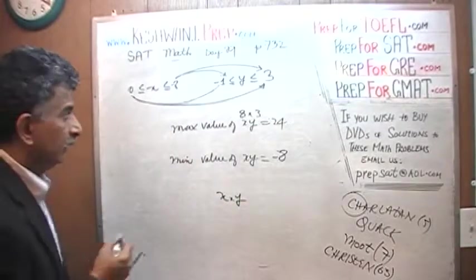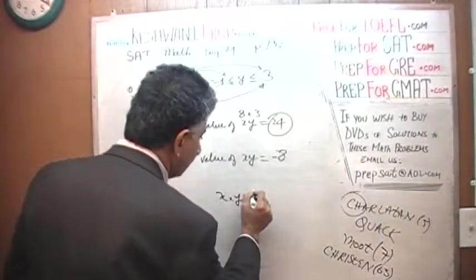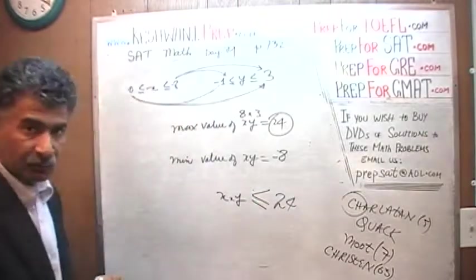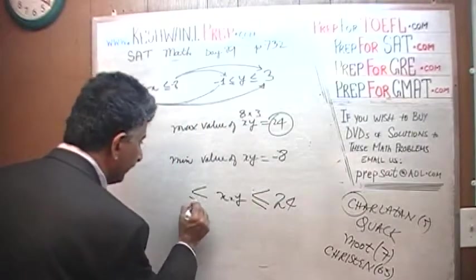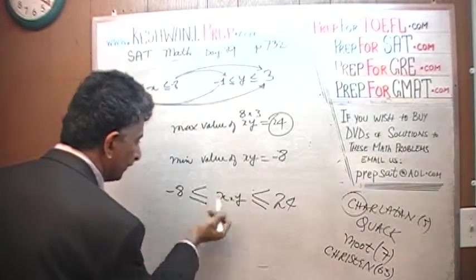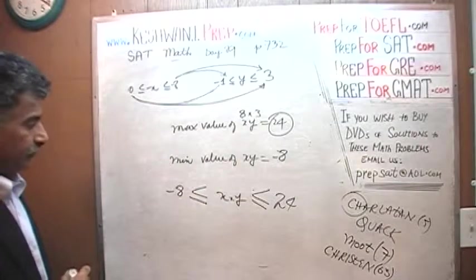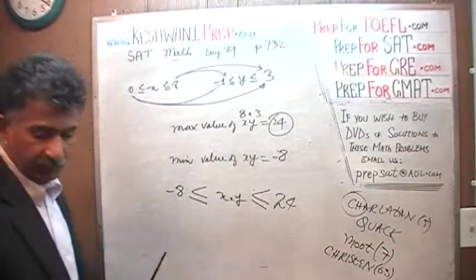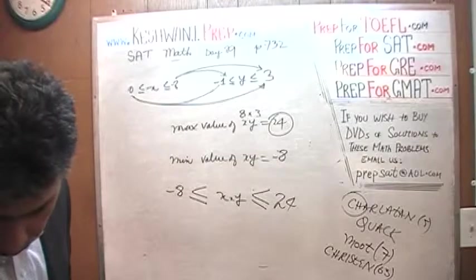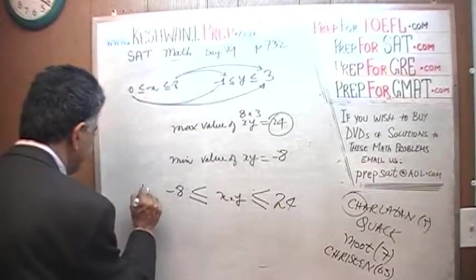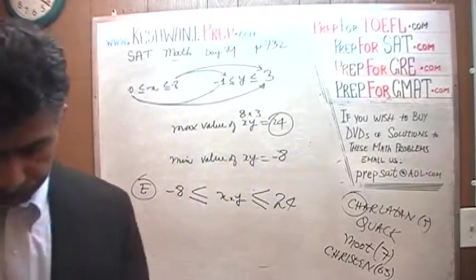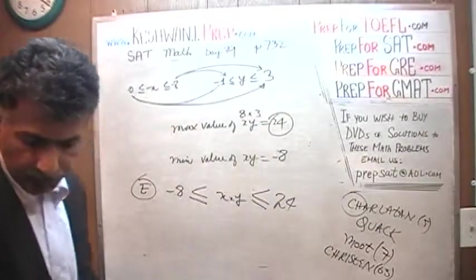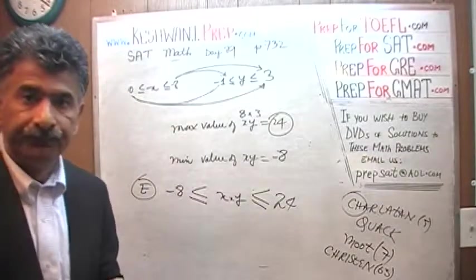And therefore, the product of X and Y could be as high as 24, cannot be more than that, it has to be less than or equal to 24, it could be as high as 24, or it could be as low as negative 8, or something more than that. So product of X and Y falls between negative 8 and 24, and that is answer choice E. That's all. I will see you tomorrow. Okay, bye now.